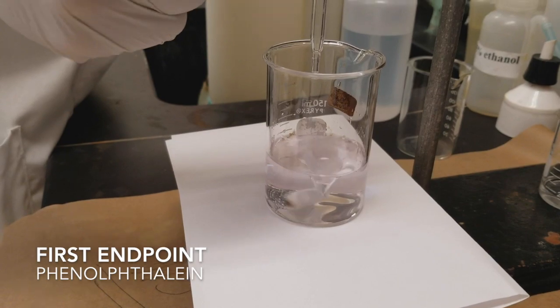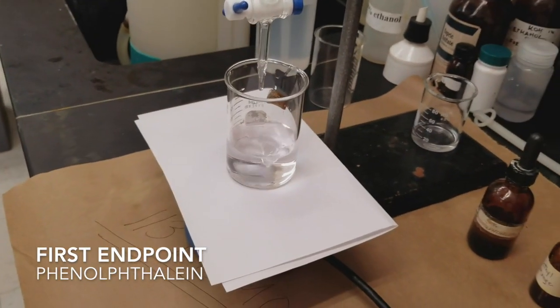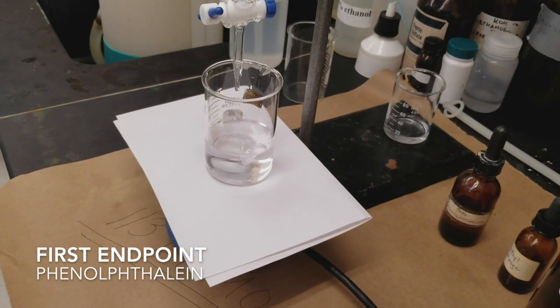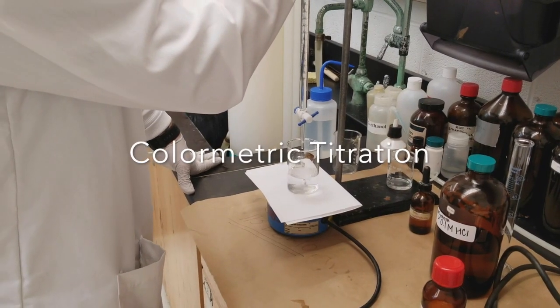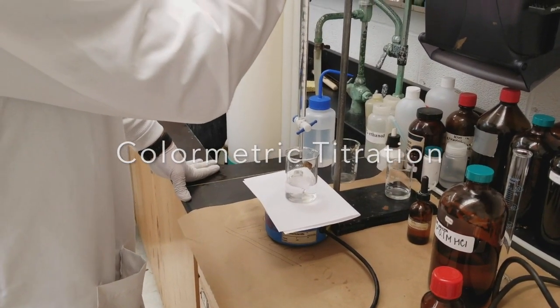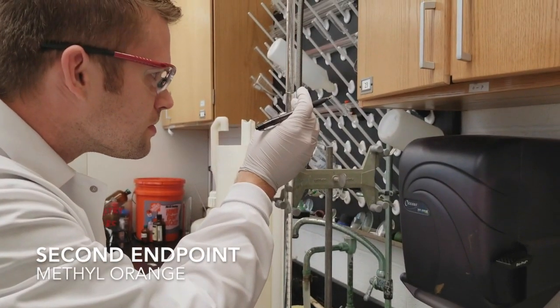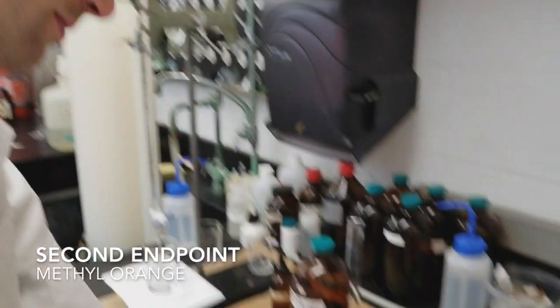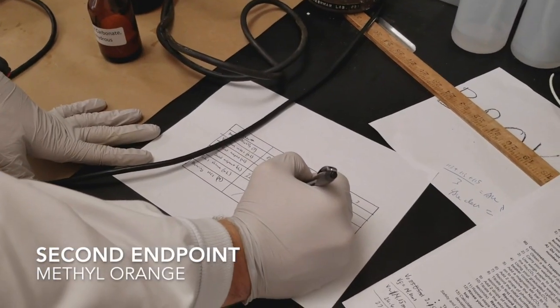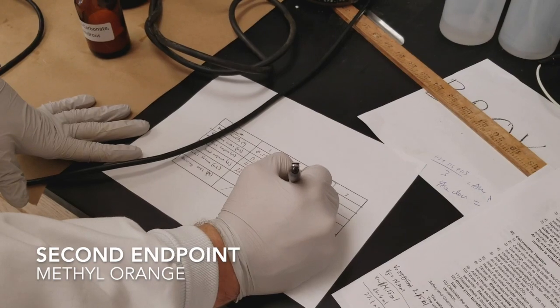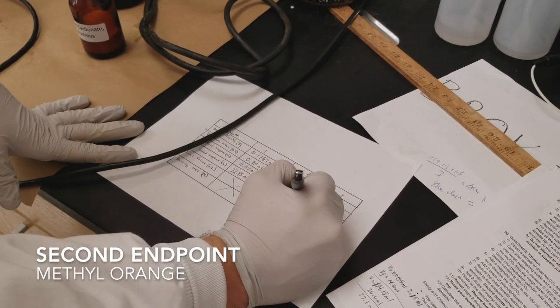Now our solution has become totally colorless, so we've reached our first endpoint. At this point, we want to make sure we record the volume of HCl left in our burette. So we're going to take that number down before we begin our second titration with the methyl orange.